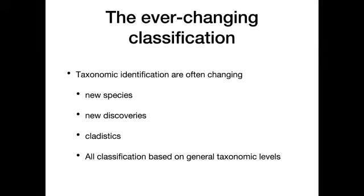The problem with taxonomy and Systematics is that it is constantly changing. New species are discovered, new relationships, new genetic links and commonalities. All classification is based on these basic general levels, but as we get further into the hierarchy — into genus and species — those are constantly changing because of new discoveries and new methods of classification. By the time this lecture is recorded and you listen to it, some insect out there has been taxonomically altered, switched from one taxonomic category to another.